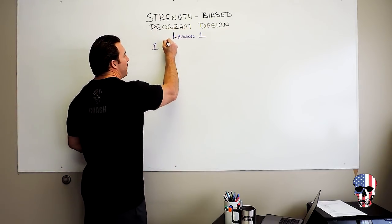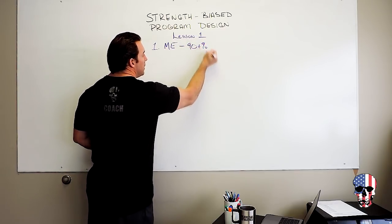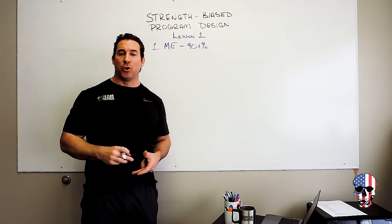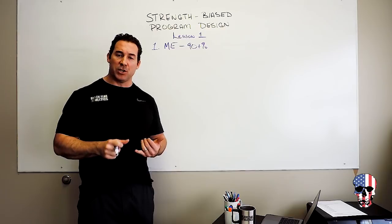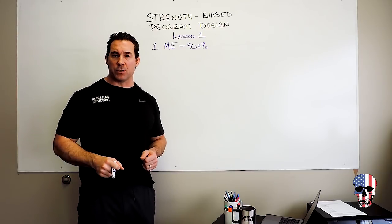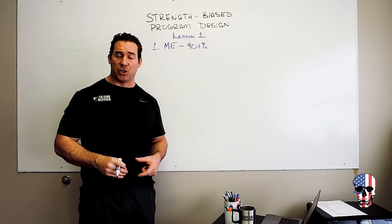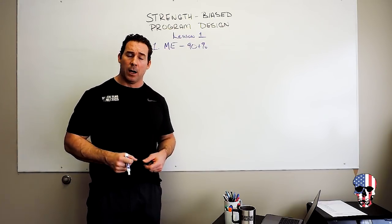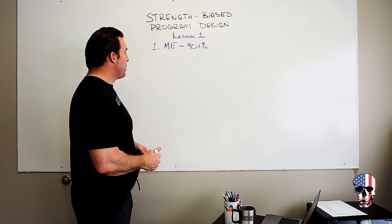So we'll do max effort work. This max effort work will be at 90 plus percent. These are traditional barbell movements, deadlift, squats, squat variations, bench variations, deadlift variations. We'll also do Olympic positional work with pauses, holds, those sets of things at 90 plus percent as well as some pulling with the Olympic works. So we do the max effort stuff.